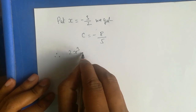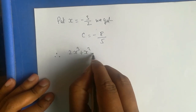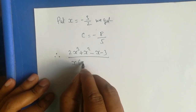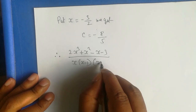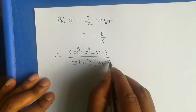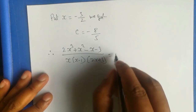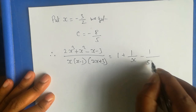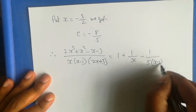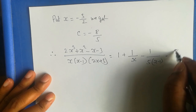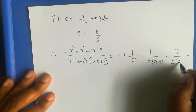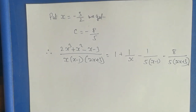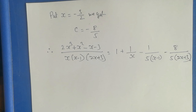Therefore, 2x cubed plus x squared minus x minus 3 divided by x(x minus 1)(2x plus 3) equals 1 plus 1 by x minus (1 by 5) over (x minus 1) minus (8 by 5) over (2x plus 3). By this, we have finished this partial fraction.